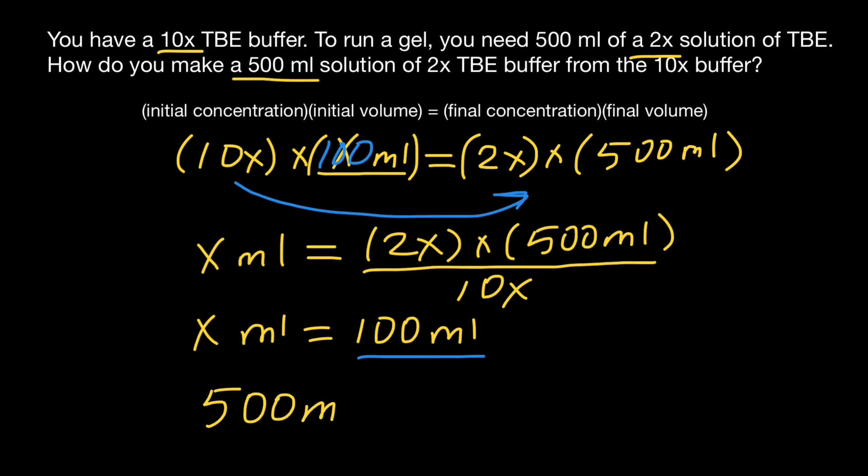500 milliliters of the final solution minus 100 milliliters of the initial solution gives us 400 milliliters of water, H2O.